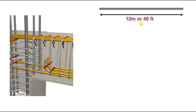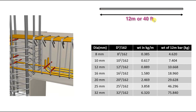Let us take the length of 12 meters or 40 feet. In the Indian market, the length of one bar will be 12 meters or 40 feet — this is the standard dimension of one reinforced bar. We have different diameter of bars: 8 mm, 10 mm, 12 mm, 16 mm, 20 mm, 25 mm, and 32 mm. First we have to calculate the weight in kg per meter. To calculate that, we use the formula D squared divided by 162, where D is the diameter of the bar. If we apply this formula, we get the weight in kg per meter.